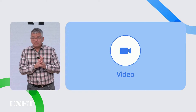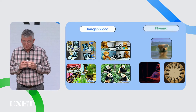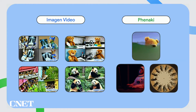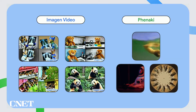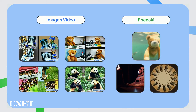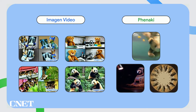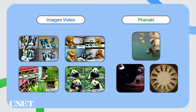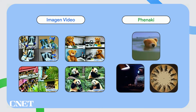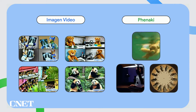We have two complementary research approaches that tackle both of these: Imagine Video and Fanaki. Imagine Video uses the same diffusion technique used in Imagine to create really crisp individual images that can be used to generate short videos. Fanaki, on the other hand, uses a language model that generates tokens over time, which allow the model to pull together a long-form coherent story.